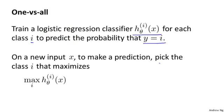Finally, to make a prediction, when we're given a new input x and we want to make a prediction, what we do is we just run all three of our classifiers on the input x, and we then pick the class i that maximizes the probability.